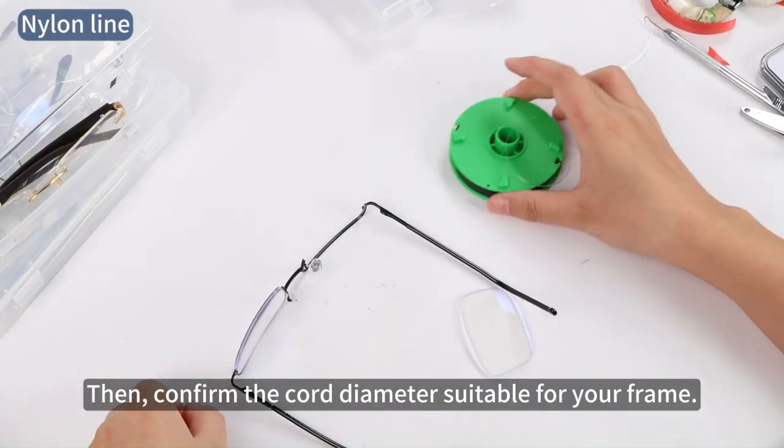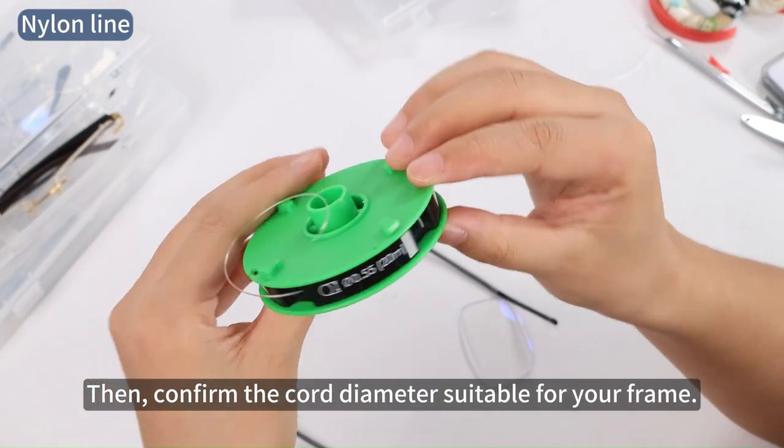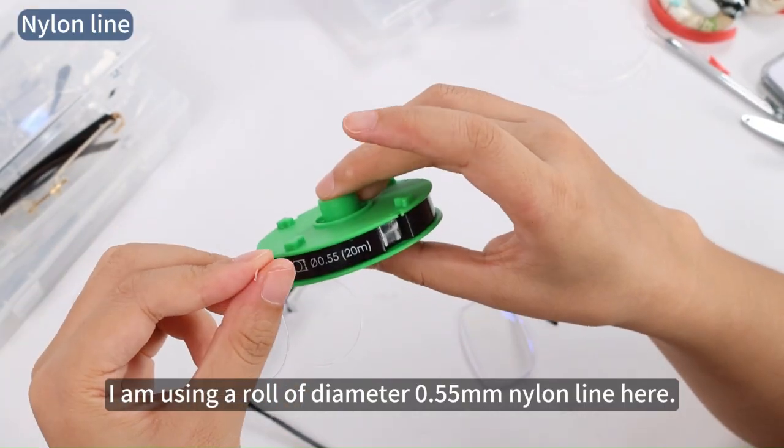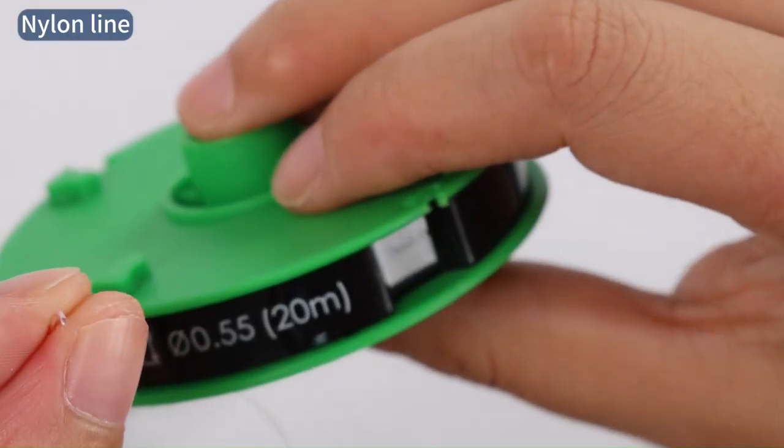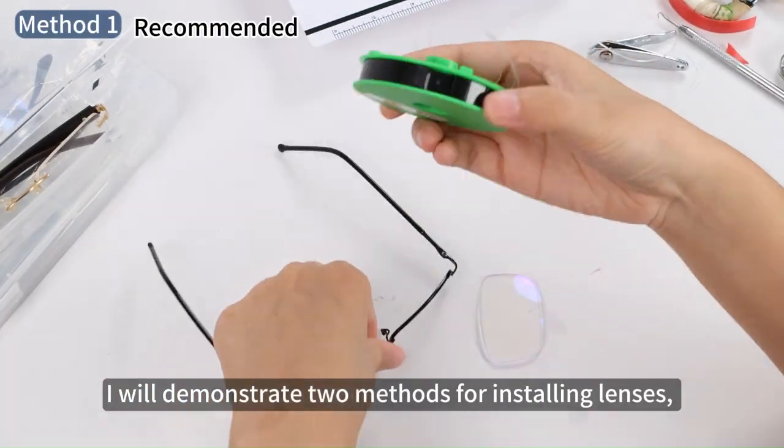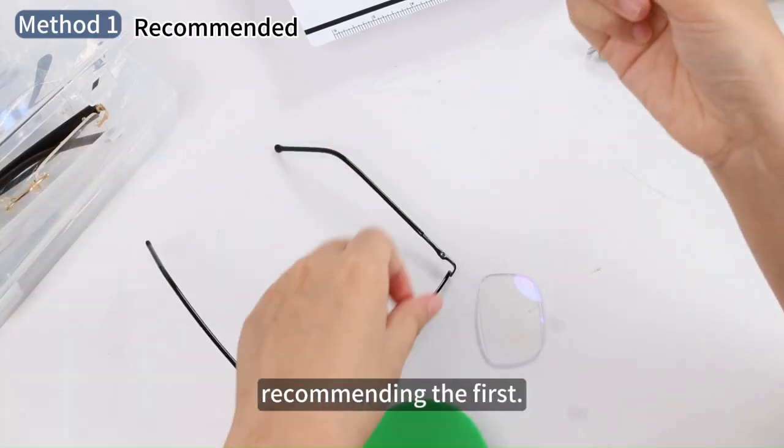Then, confirm the cord diameter suitable for your frame. I am using a roll of diameter 0.55mm nylon line here. I will demonstrate two methods for installing lenses, recommending the first.